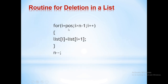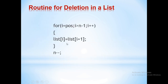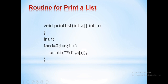For deletion, the next element has to be copied to the position at which the deletion has to happen. The element at i plus one is copied to i, where the initial value of i is pos. This is repeated until it reaches the end of the list. Since an element has been deleted from the list, we decrement the size of the array by one using n minus minus.